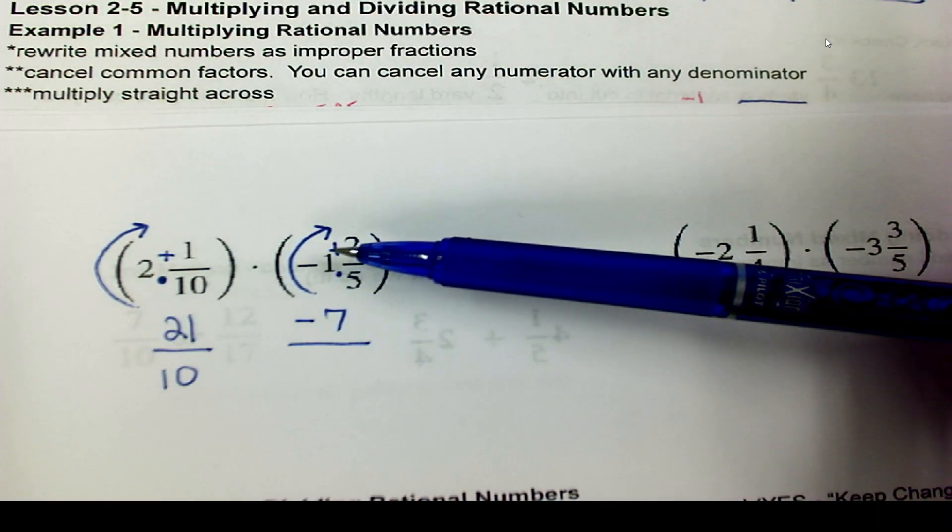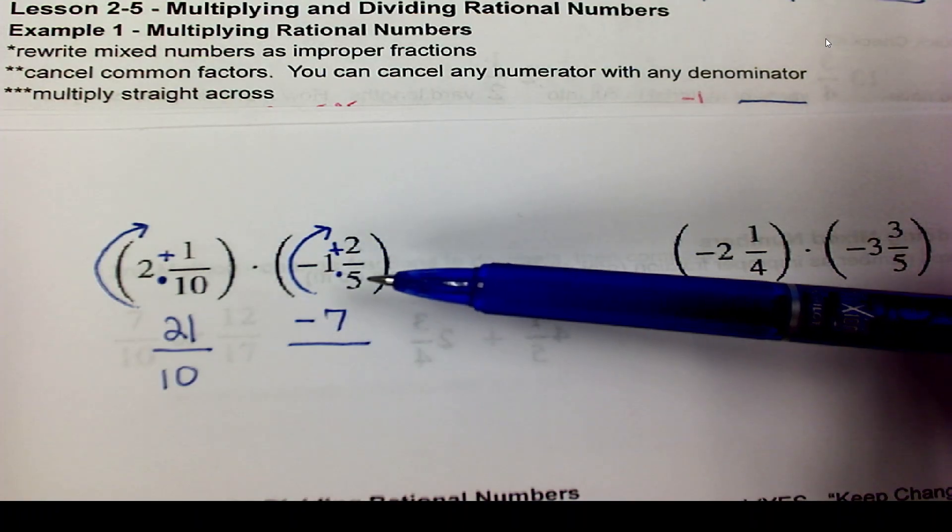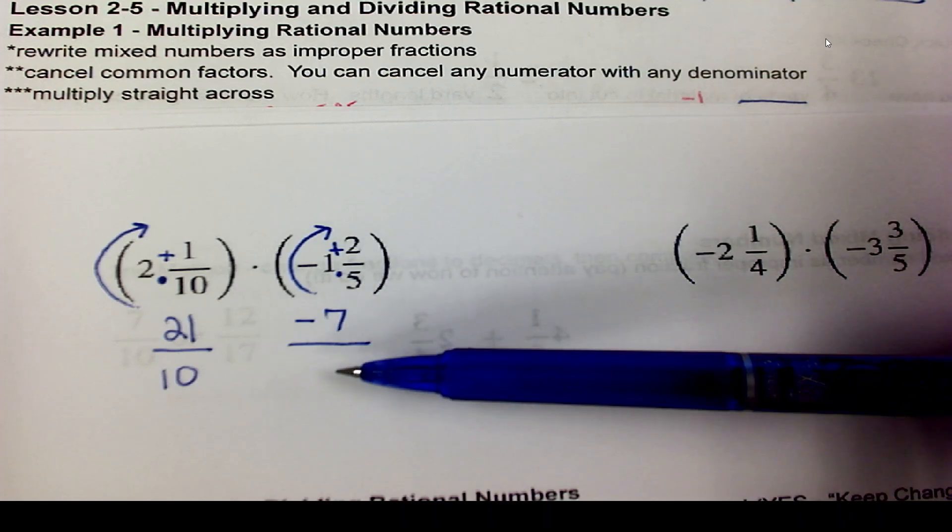But again, because this is a negative mixed number, it should be a negative fraction. And now we can just steal our denominator, that 5, and it comes straight down here.